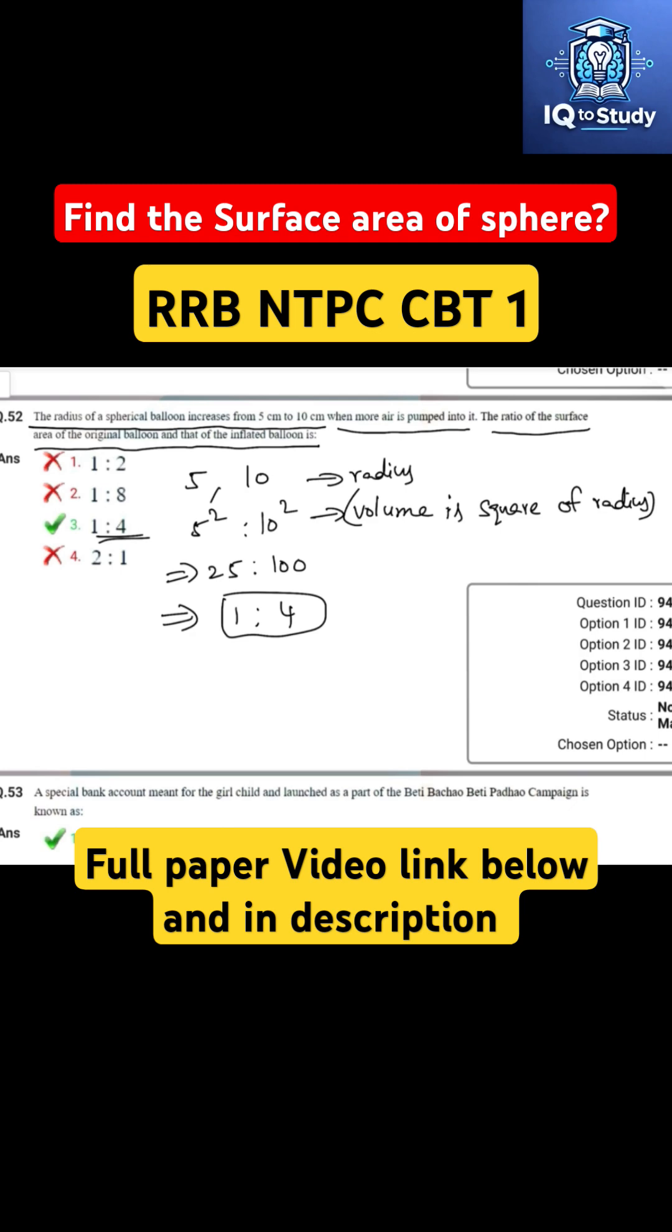This can also be solved using another method. We know that surface area of sphere is equal to 4 pi r square.